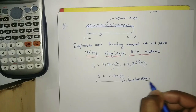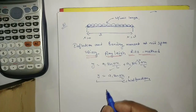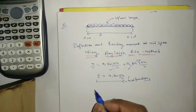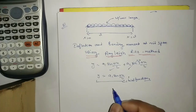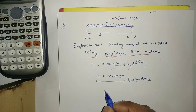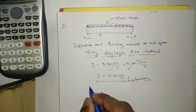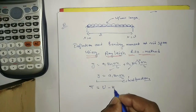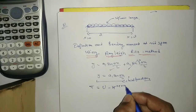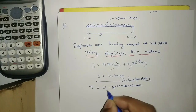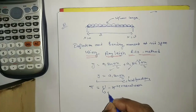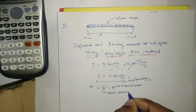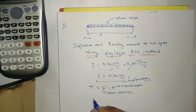Now we consider the strain energy and external work. The total potential energy of the beam is denoted by π, which equals the strain energy U minus the external work H. Here, U is the strain energy of the beam.